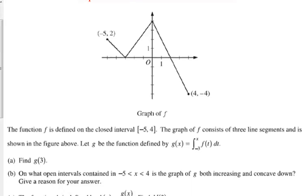So, what's in here? They tell us this is f. It's defined on the closed interval from negative 5 to 4. It's got three line segments. g is defined as the integral from negative 3 to x of f.